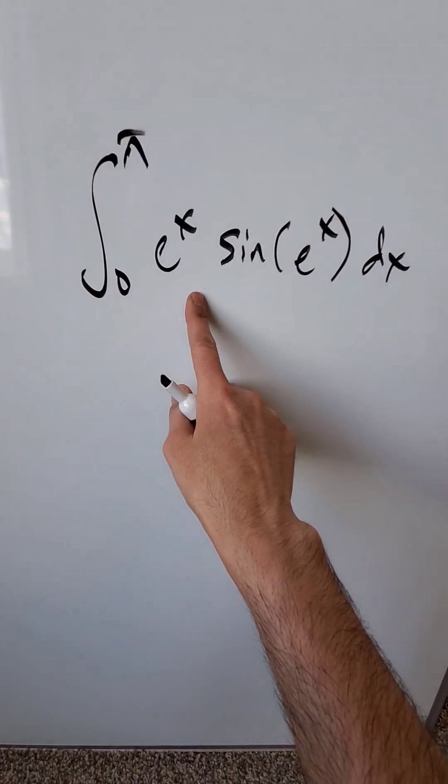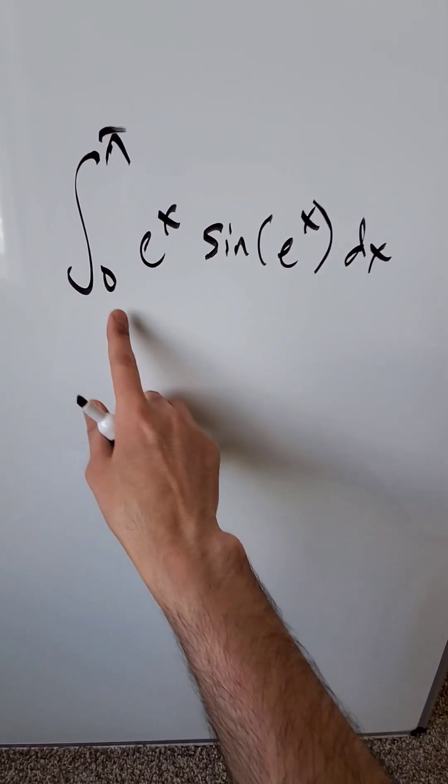Let's solve this definite integral: e to the x times sine of e to the x, dx, evaluated from 0 to pi.